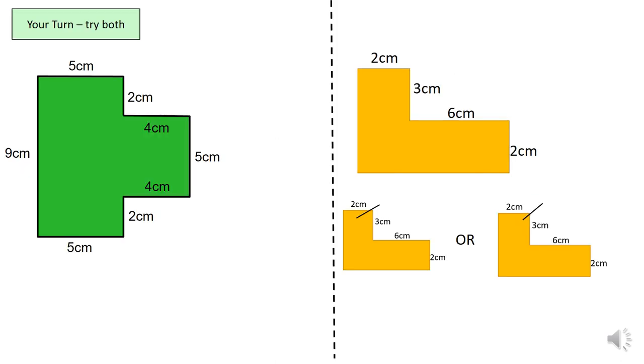I want you to have a go at both of these. So with the first one, there will be one split. I'm sure you know where it is for the green shape. For the second one, you can split it each way. I want you to pause the video now, try both of those and we'll come back together with the answers shortly.